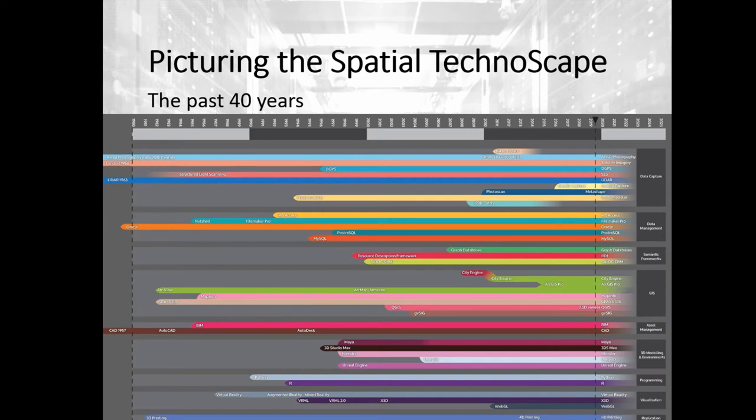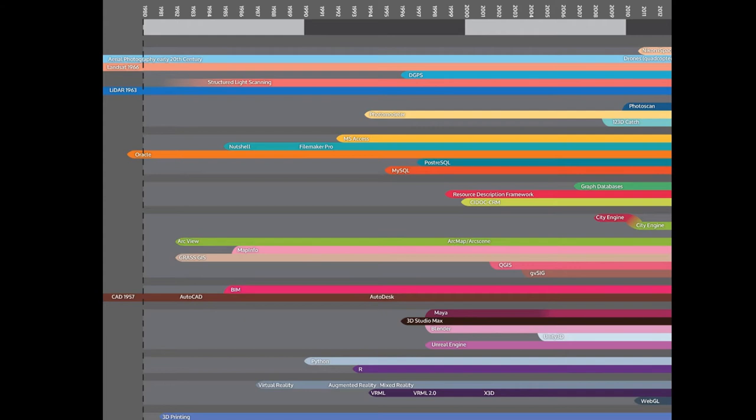I've put this up on Twitter — please comment if I've missed anything — but picture this technoscape: all those technologies we've applied that led to where we are today. Pre-1980s we have aerial photography, satellite imagery, LiDAR from NASA programs, CAD starting shortly after computing began, the Oracle database appearing in the 80s, structured light scanning, and a database called Nutshell that became FileMaker Pro after Apple acquired it.